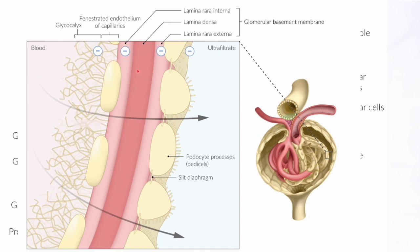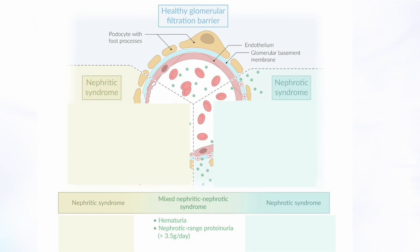In nephrotic syndrome, if the barrier is damaged and the negative charge is lost because the podocytes are damaged, then there is no repulsion. Therefore, proteins can easily pass through those pores and get into the filtrate, and we lose protein. This picture shows the difference between nephrotic and nephritic syndrome.